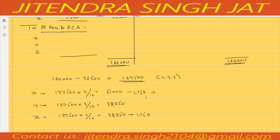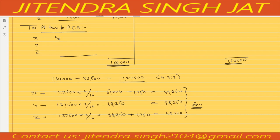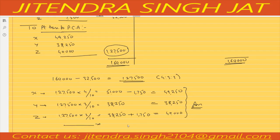So X's share becomes 51,000 minus 1,750 equals 49,250. Y's profit remains 38,250 and Z's profit becomes 40,000 as per the guarantee. This is how distribution of profit is done in the case of guarantee of profit.